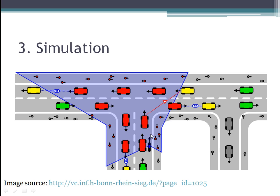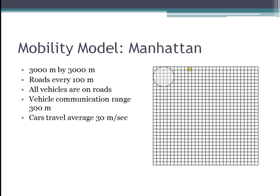Now let's talk about the simulation. I wrote a program that simulates this PARROTS model. The mobility model uses a 3,000 by 3,000 grid with roads every 100 meters. All vehicles are on the roads — no driveways or back alleys. The vehicle communication range is 300 meters, so each vehicle's communication range covers roughly that size square. Cars travel about 30 meters per second, so over the course of a simulation run, a car might go halfway across the grid.